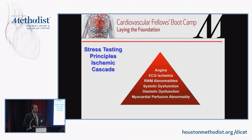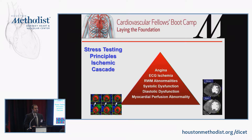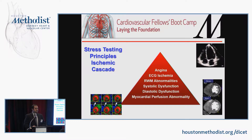We're all familiar with the ischemia cascade. Before the patient ends up having angina from coronary artery disease, you start from the bottom of the pyramid, where there is evidence of perfusion abnormality detectable with nuclear, CT, or cardiac MRI. In patients with obstructive coronary artery disease, there is reduced coronary perfusion leading to a cascade: diastolic dysfunction, then systolic dysfunction, then wall motion abnormalities, then EKG changes, and finally angina.